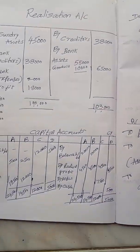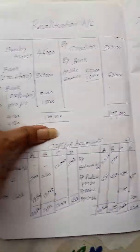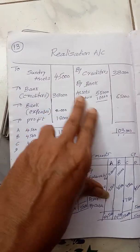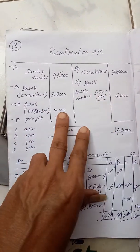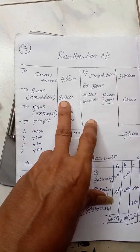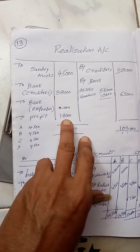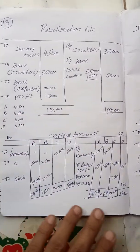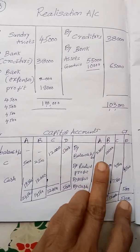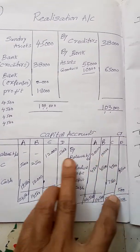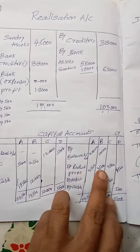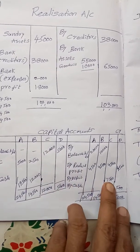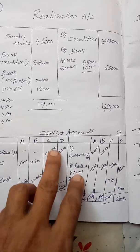First, prepare the realization account — transfer all assets and liabilities, assets are sold including goodwill, creditors are paid, and realization expenses are recorded. The profit is shared equally since the ratio is not given. Capital accounts show ₹20,000, ₹10,000, ₹12,000, and ₹5,000. By realization profit, and by deficit in C's capital account: ₹12,000 minus ₹4,500.